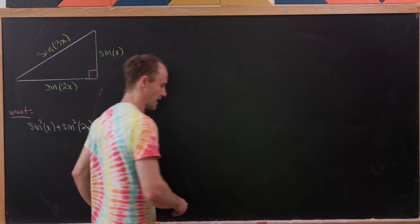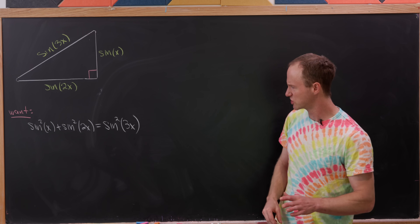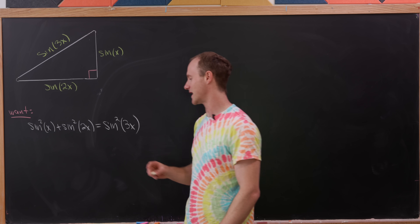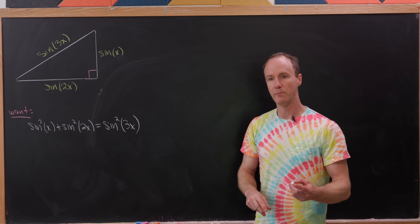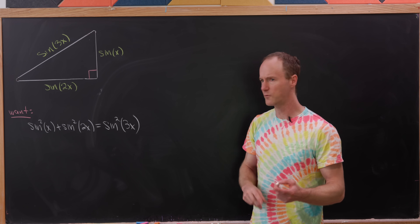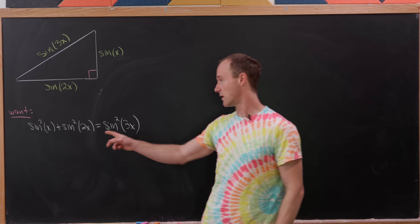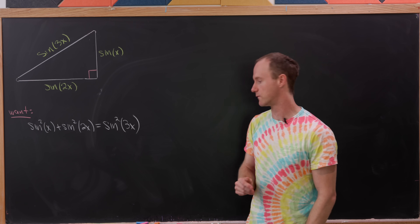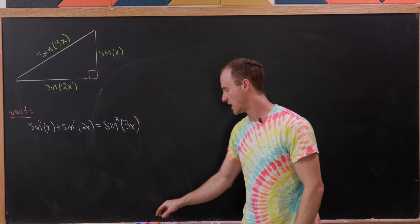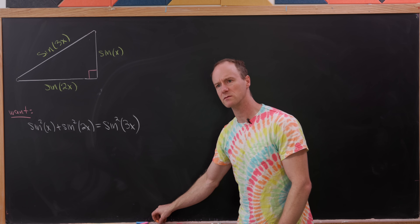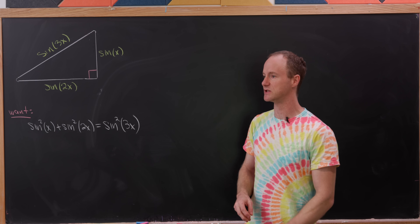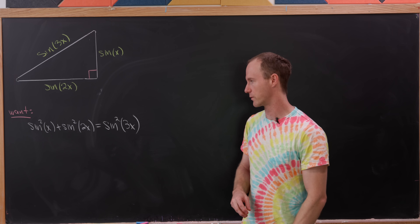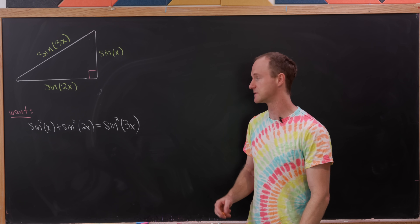What we want is that sine squared of x plus sine squared of 2x equals sine squared of 3x. That looks a little bit tricky because our arguments of sine are all different. But you've probably heard of a double angle formula — well, there's also a triple angle formula. Let's use this opportunity to derive the double angle formula, even though you may have it memorized.